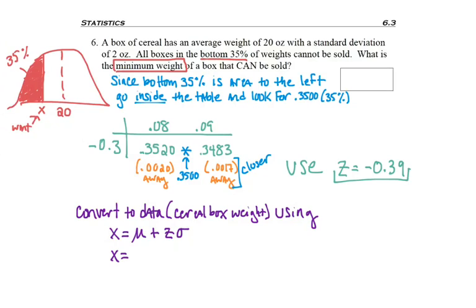So using the information I have, X equals 20 because I was told that the average weight is 20, plus the z-score I just found. And then don't forget, we were told that the standard deviation is 2 ounces.